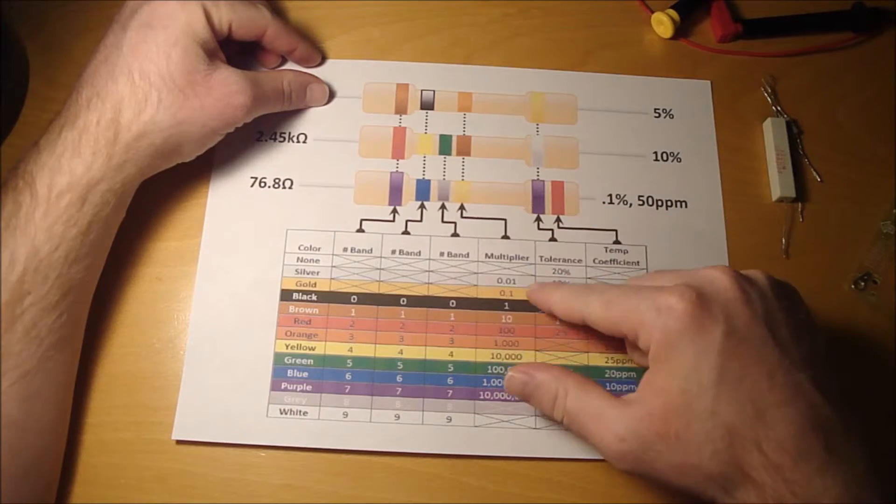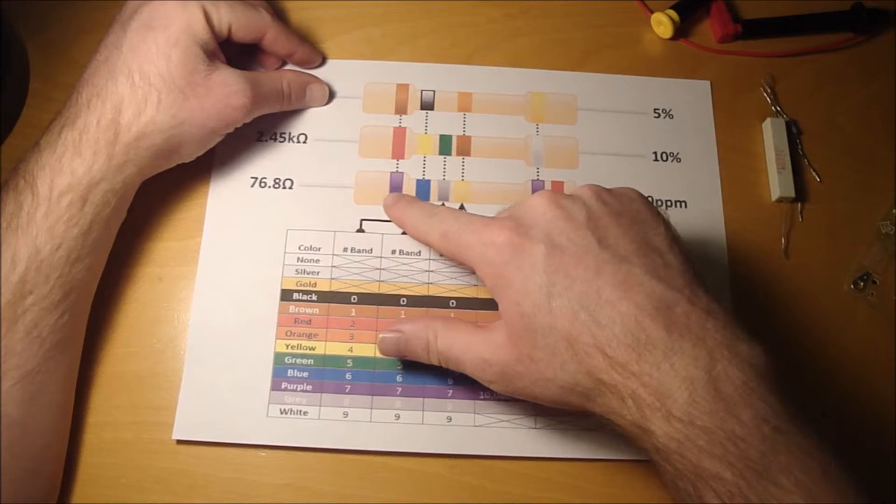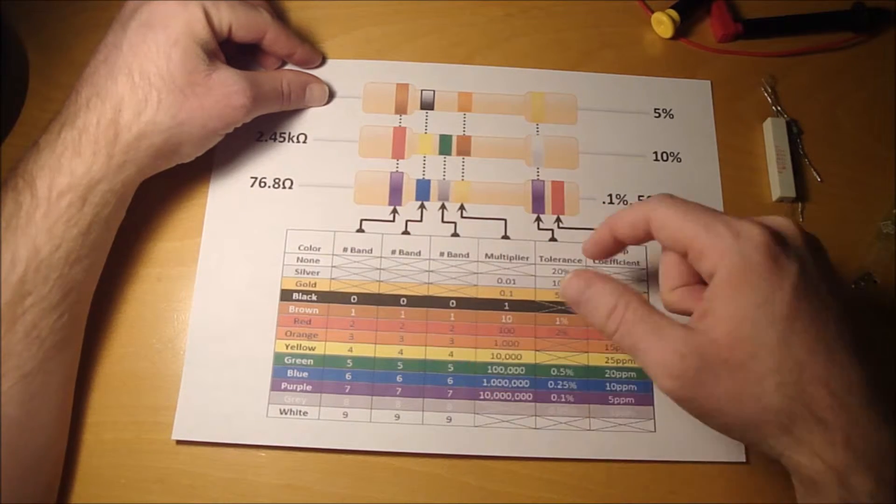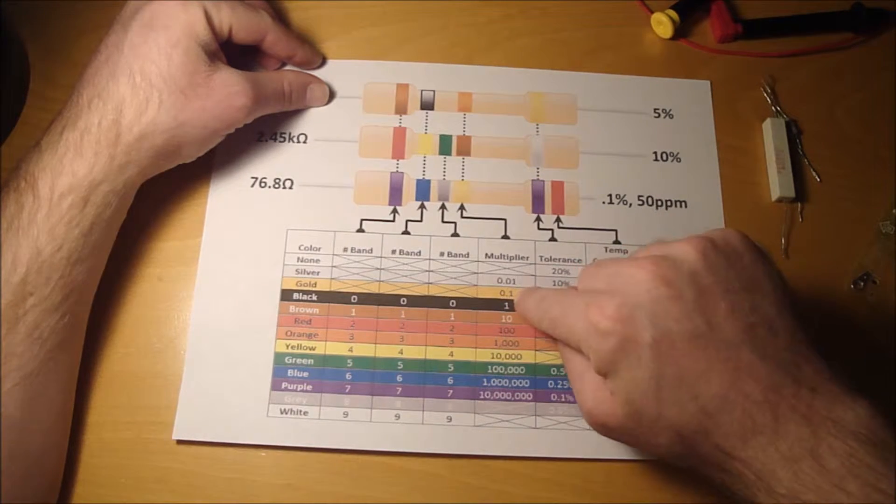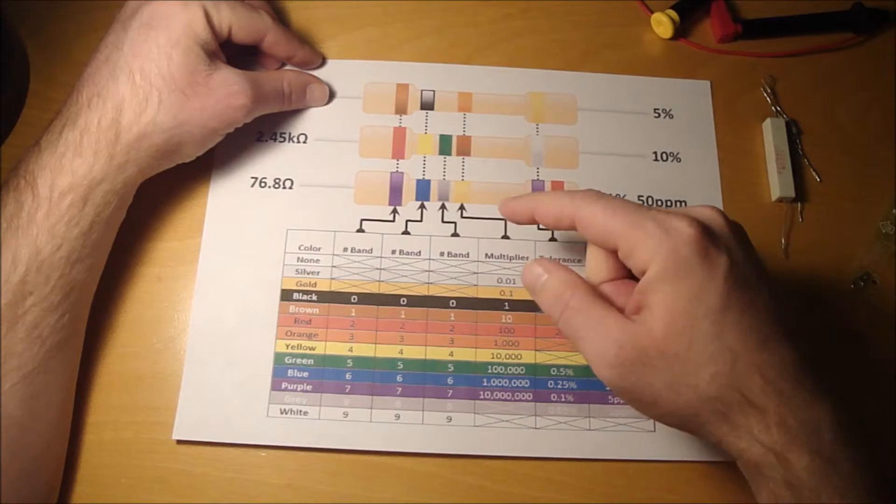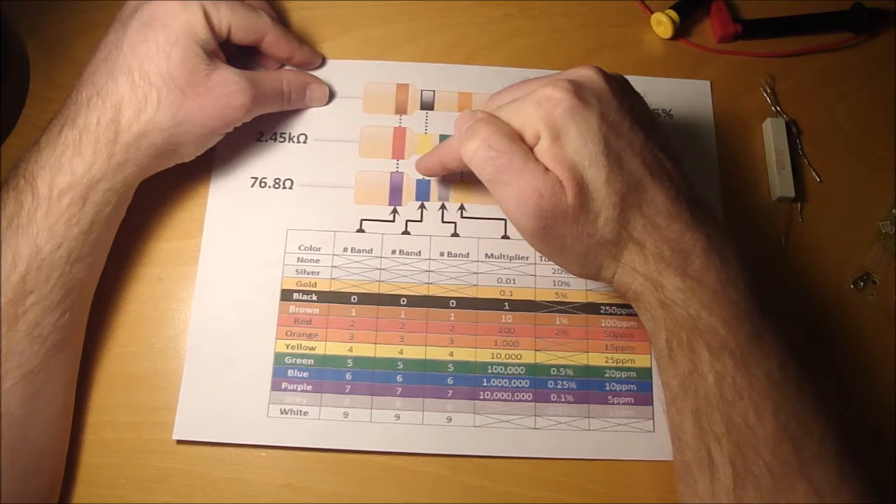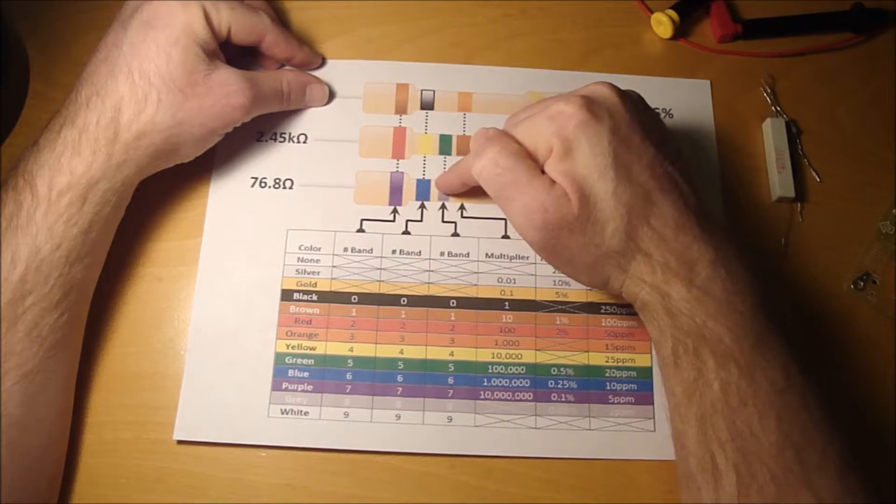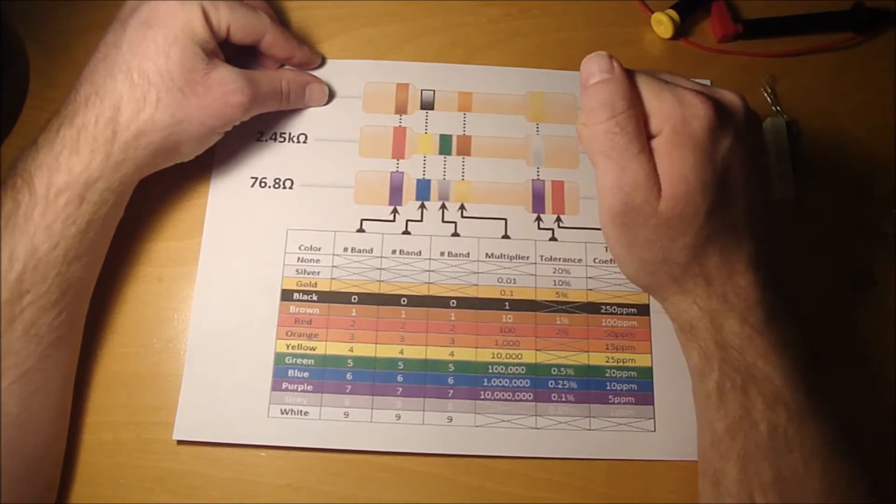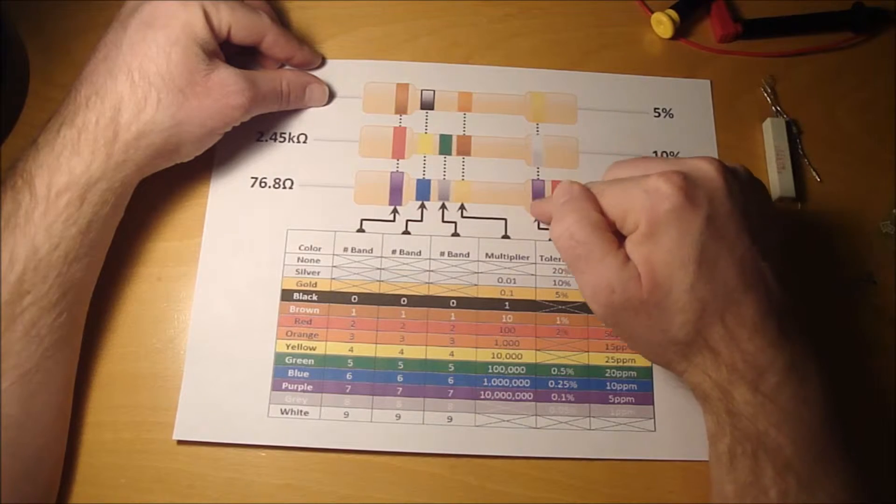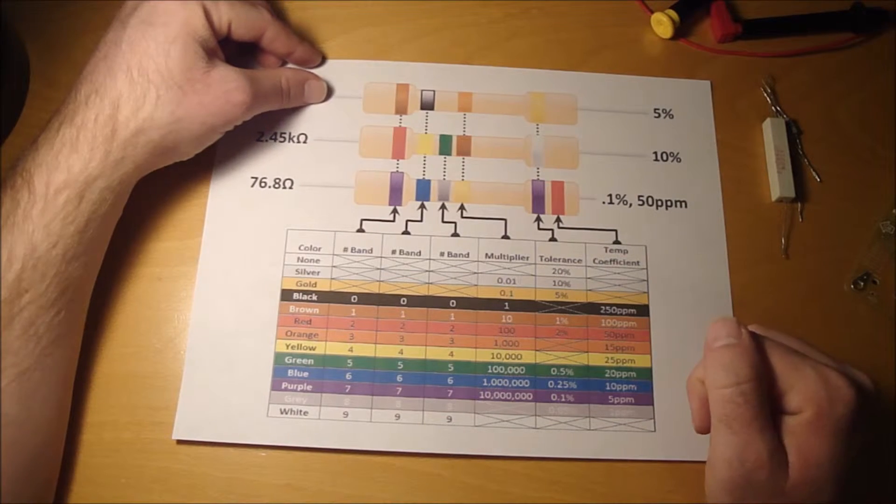This one down here is supposed to be a gold band. So on this one, you have a gold band in the multiplier. Then you'll see here that it's times 0.1, and silver is times 0.01. So you have purple, which is seven, blue, which is six, gray, which is eight. And then your multiplier is times 0.1. So that'd be 76.8 ohms. You got a tolerance of purple, which is 0.1%, temperature coefficient of 50 PPM.